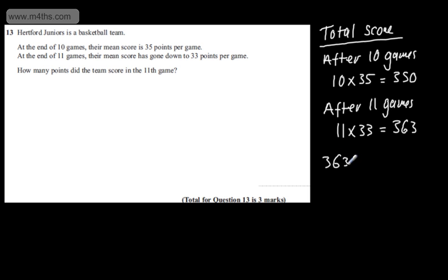So we can say 363 minus 350 is equal to 13. So they scored 13 points in the 11th game.